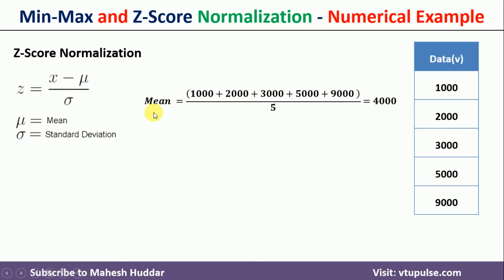The mean is always the sum of all data points divided by the number of data points. So 1000 plus 2000 plus 3000 plus 5000 plus 9000, divided by 5, which equals 4000.